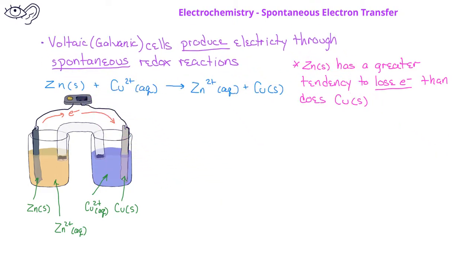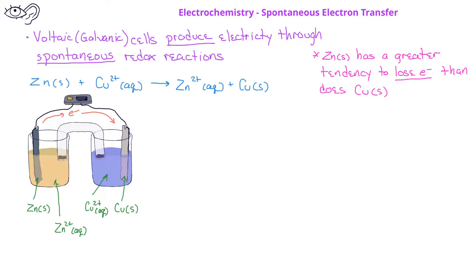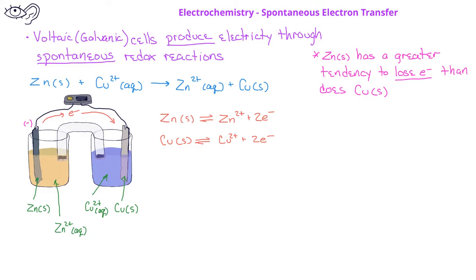If we think about this voltaic cell involving zinc metal and zinc ions in one half cell and copper metal and copper ions in the second half cell, we can begin to think about why a spontaneous reaction is going to take place. The zinc metal will reach equilibrium with the zinc ions in solution. At the same time, the copper metal will reach equilibrium with the copper ions in its half cell. The zinc metal has a greater tendency to lose electrons than does the copper metal. As a result, the zinc strip in its half cell will end up with a slightly negative charge, or at least a more negative charge than the copper metal.